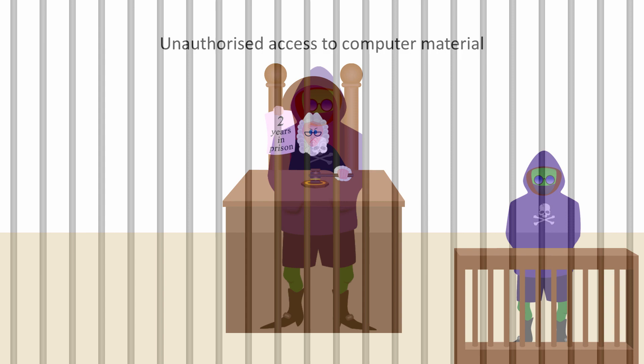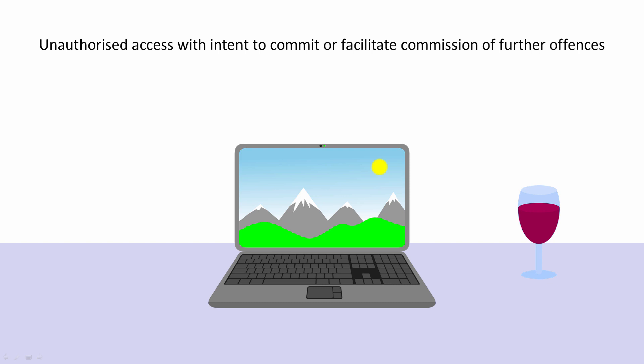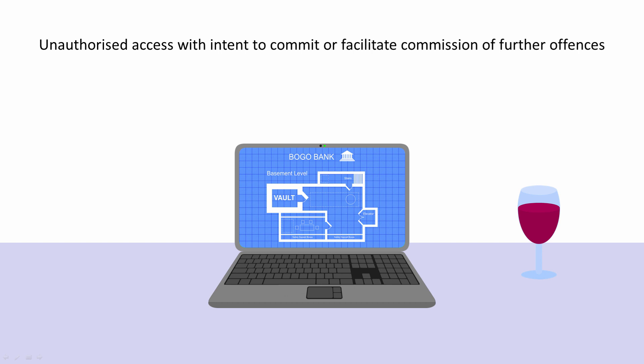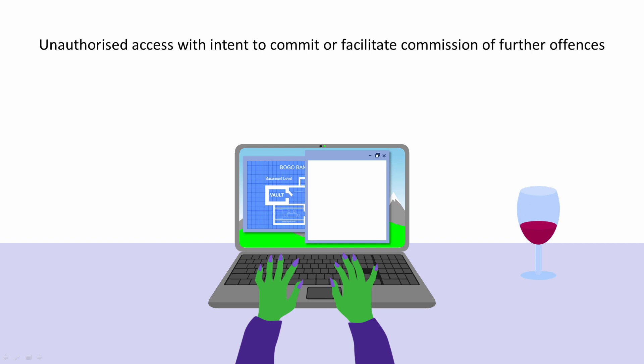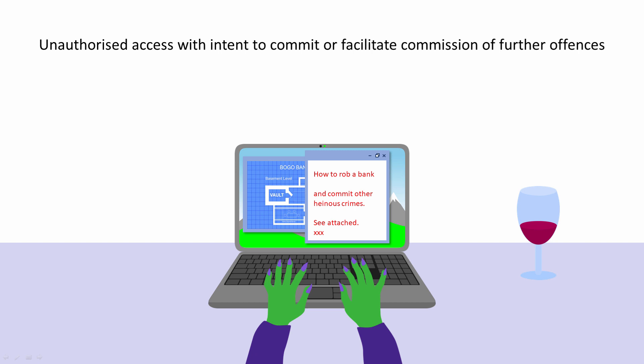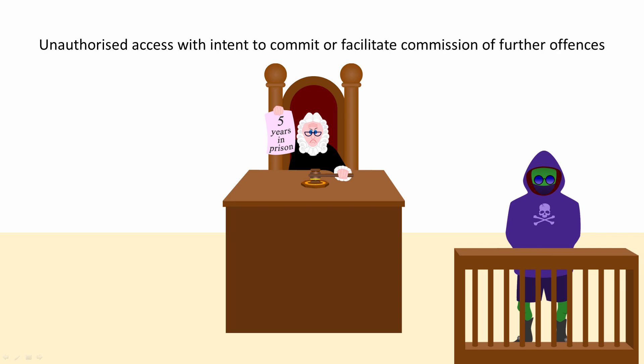In the second section of the Computer Misuse Act — unauthorised access with intent to commit or facilitate commission of further offences — the law considers why an offender was hacking. If their intention was to commit a further crime, perhaps fraud, robbery, blackmail, or even worse, then the law takes a much dimmer view. The same applies if the offender was knowingly helping someone else to commit an offence. They can be punished for what they were planning to do. If convicted, someone over the age of 18 could be sent to prison for up to five years, along with a big fine.